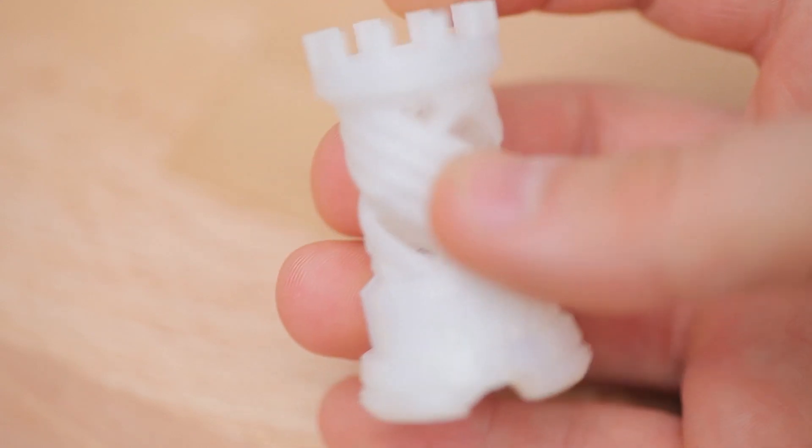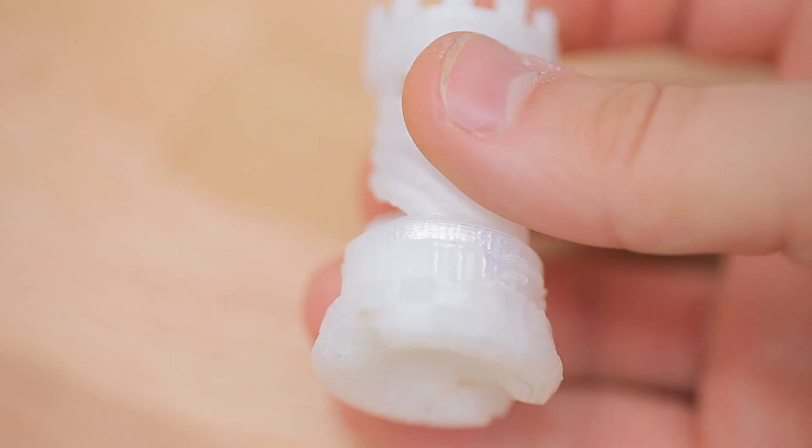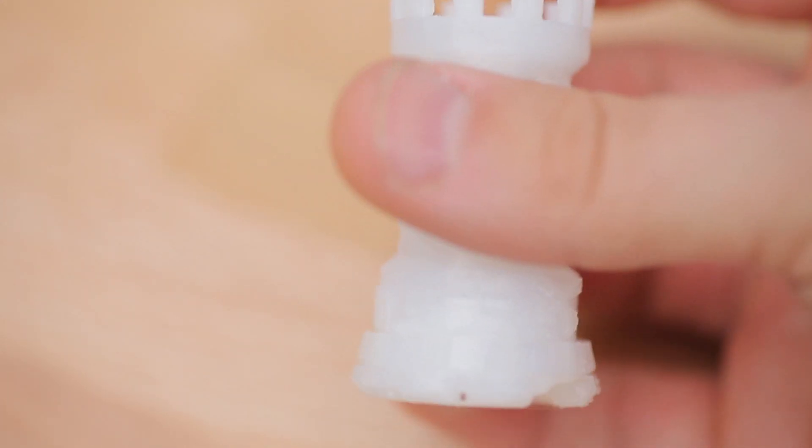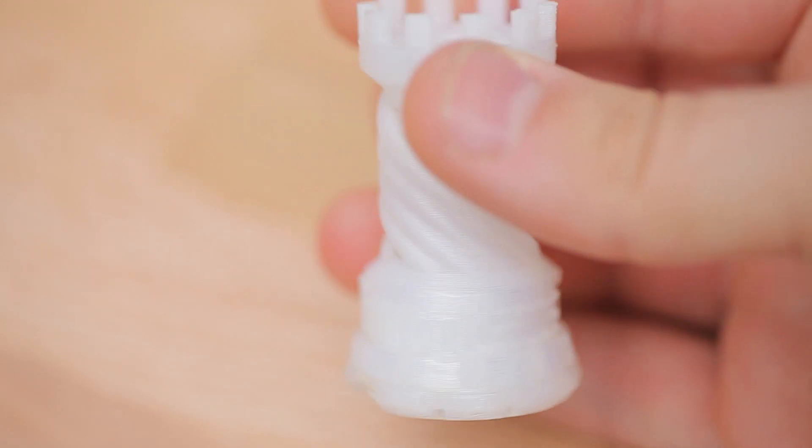Next up, a part printed from Tallman Bridge, which is an easy-to-print nylon copolymer, and that print turned out pretty nicely as well.